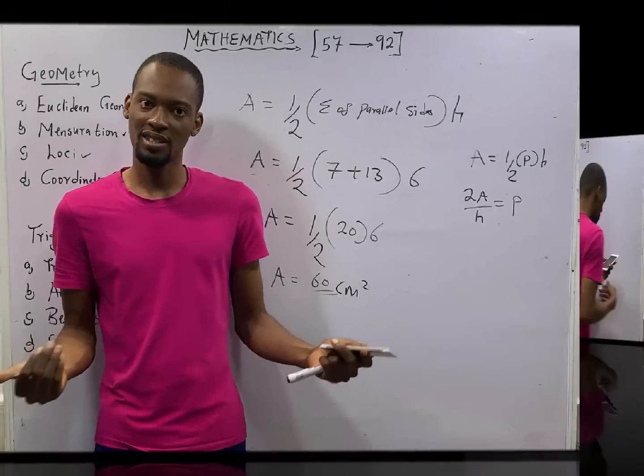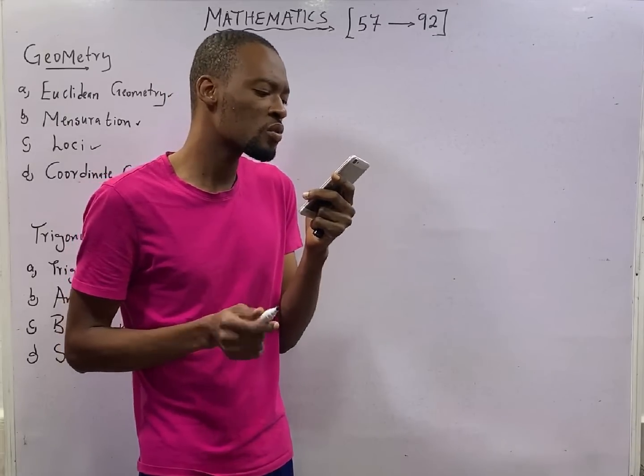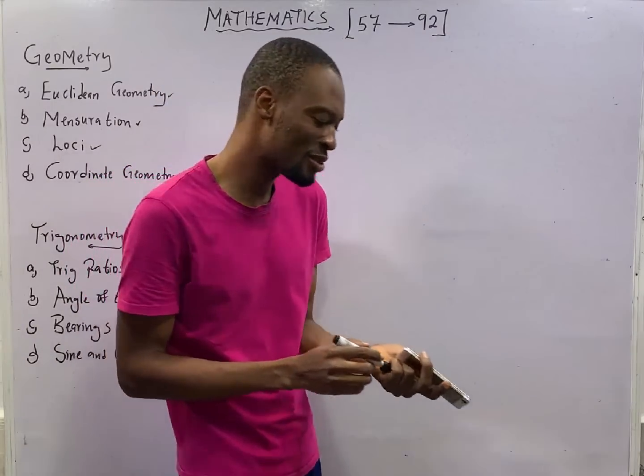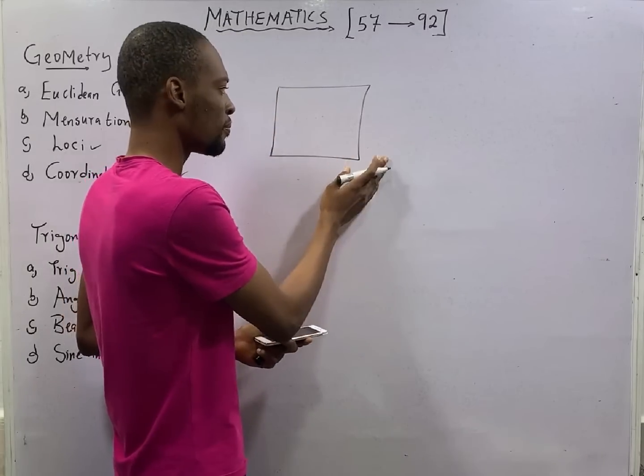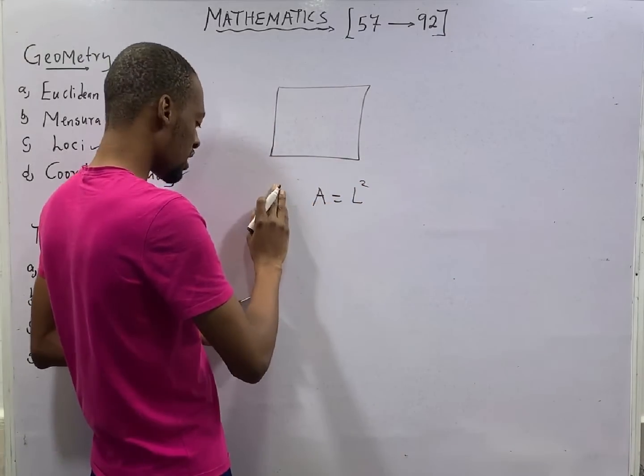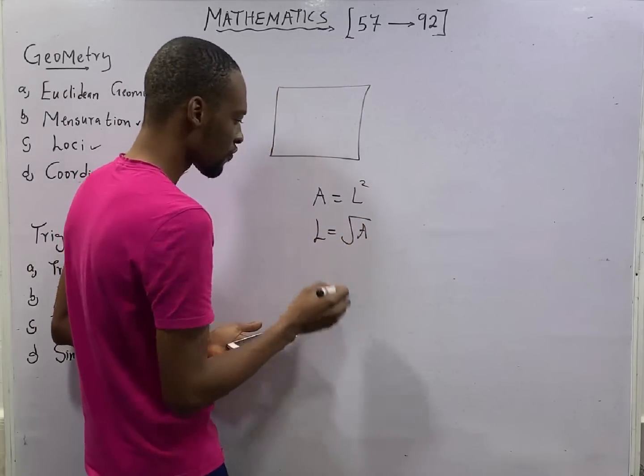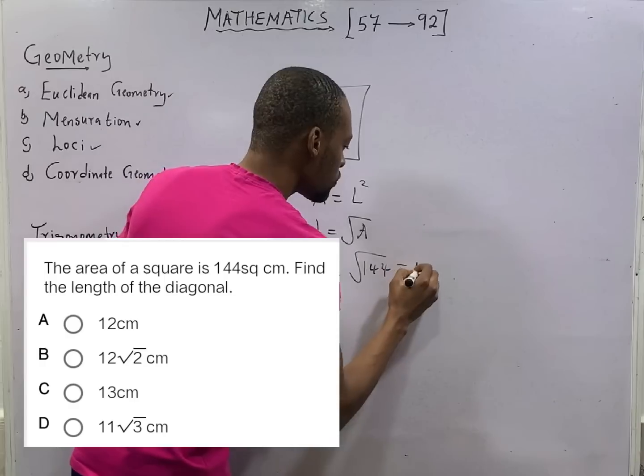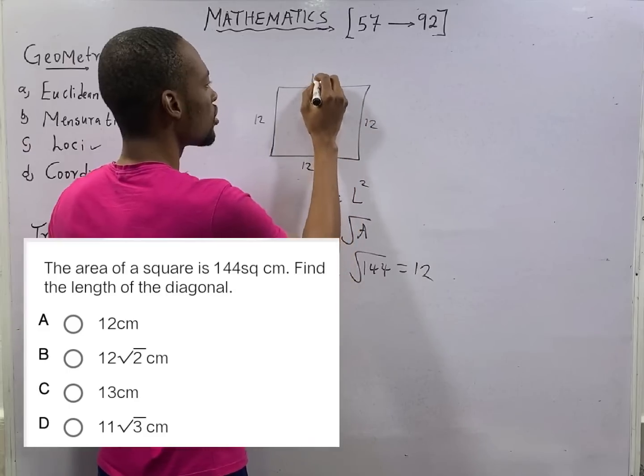Let's take a look at the next question. The area of a square is 144 square centimeter. Find the length of the diagonal. This is a square. Square, all the sides are the same. Area of the square is length squared. Once you square the length, you get the area. Which means, length of the square is the square root of area. Now, the square root of area is square root of 144. And that will give you 12. Each of the lengths is 12, 12, and 12.